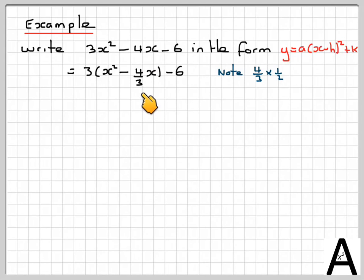Then we take half of this number, so to do that we need to do 4 over 3 times half of it, so the 2 and the 4 cancel there and we get 2 thirds. So we are now taking half of the number and we now rewrite this as 3 brackets x minus 2 over 3 squared minus 6. So when we took half of this number and then we get this number and we put it in here.